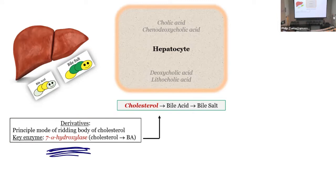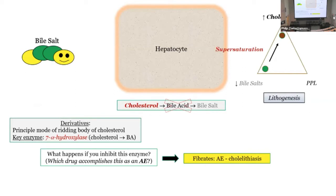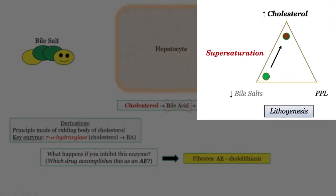The key step is 7-alpha-hydroxylase. I don't see them asking much about it directly — it's often a distractor — but you have to be aware of it because if you inhibit that enzyme, which drug does this as an adverse effect? Fibrates. Fibrates inhibit 7-alpha-hydroxylase, so we're not getting bile acids made. If we're not getting bile acids, we can't get rid of cholesterol, leading to supersaturation — that's your stones associated with fibrates. The side effect is cholelithiasis.